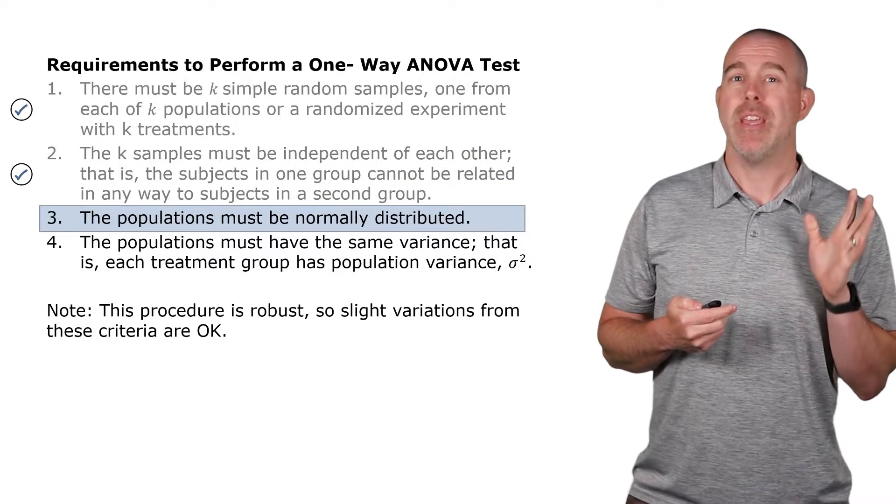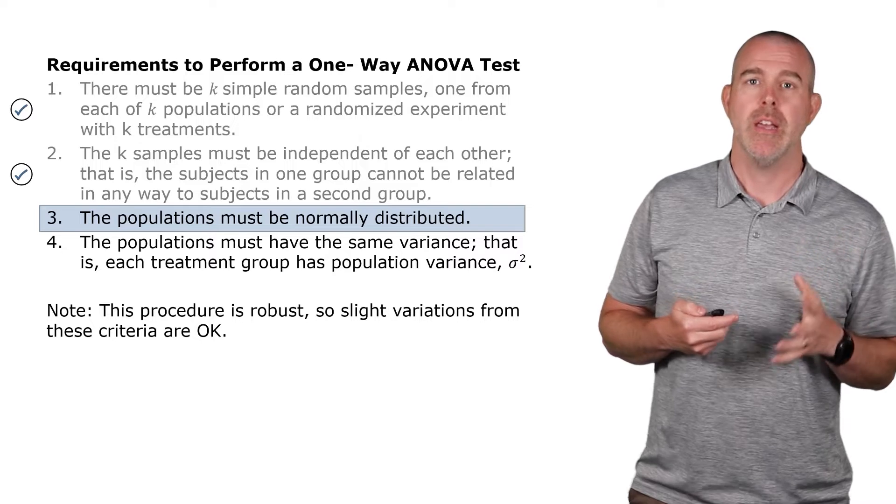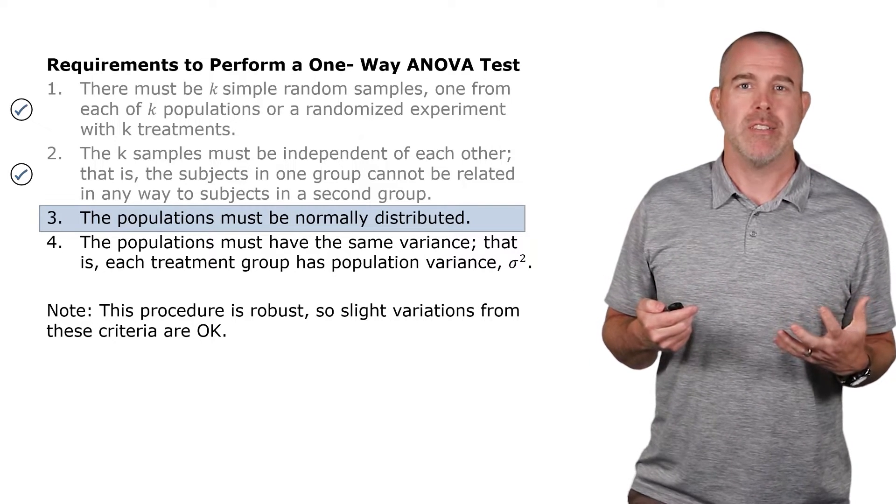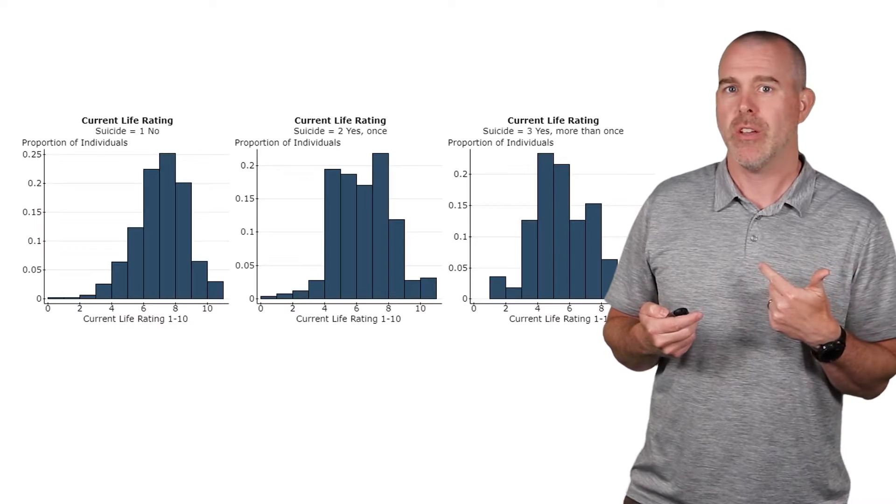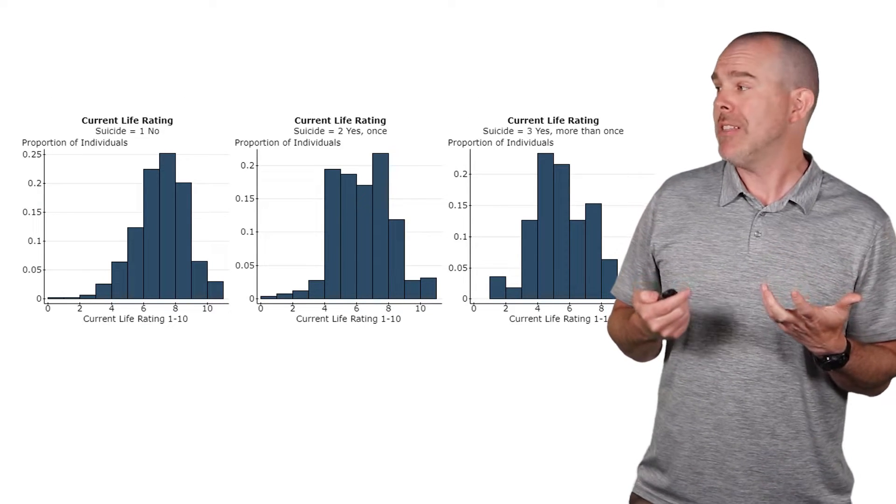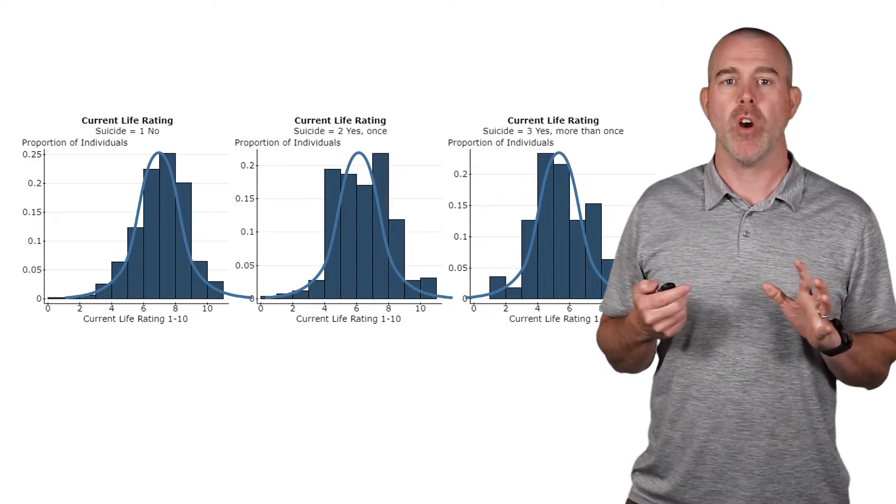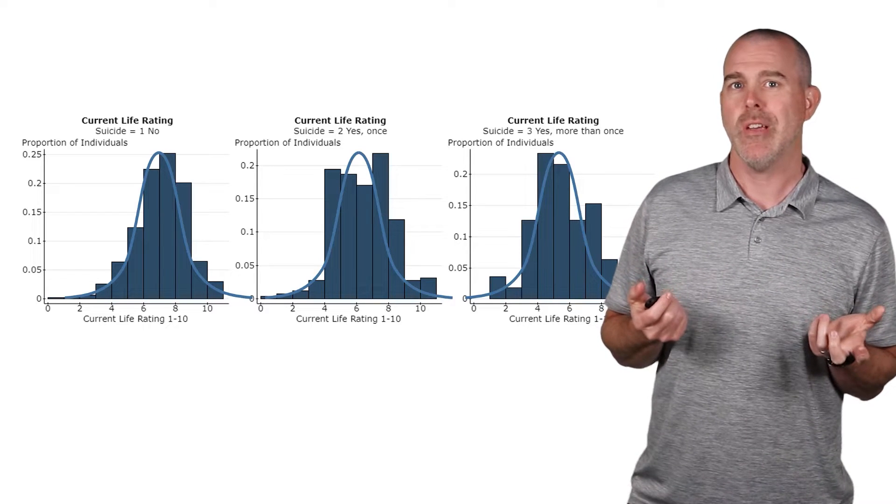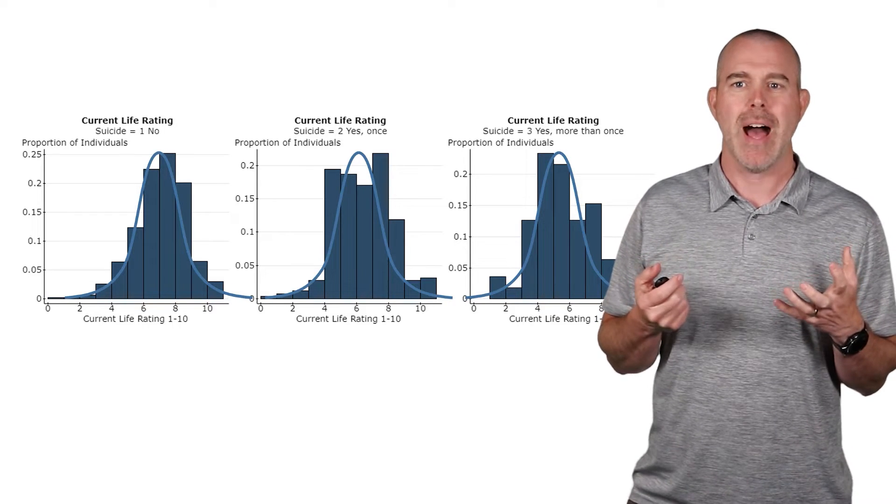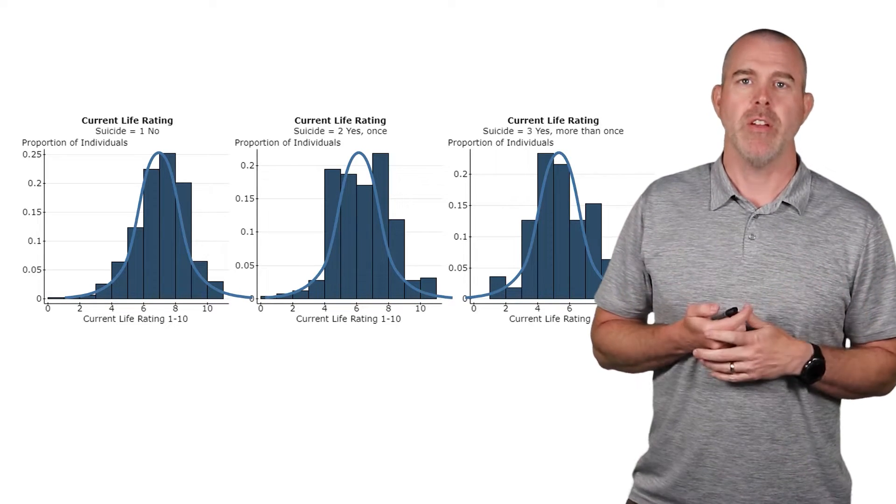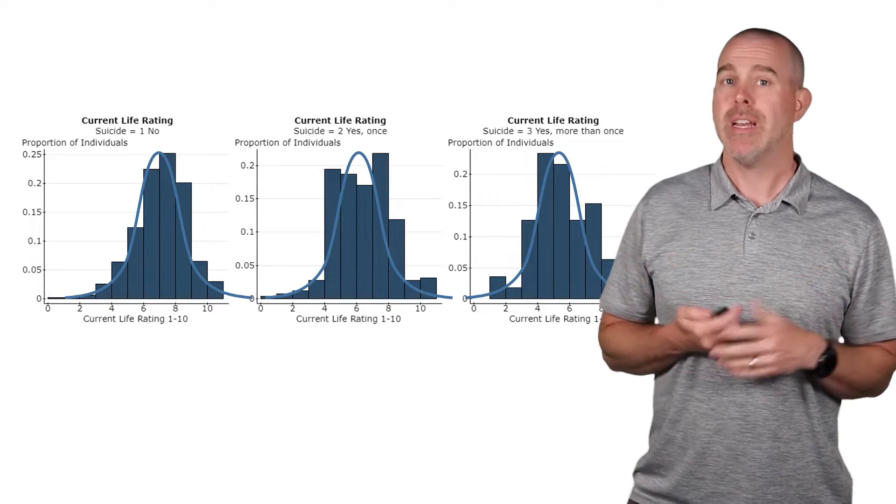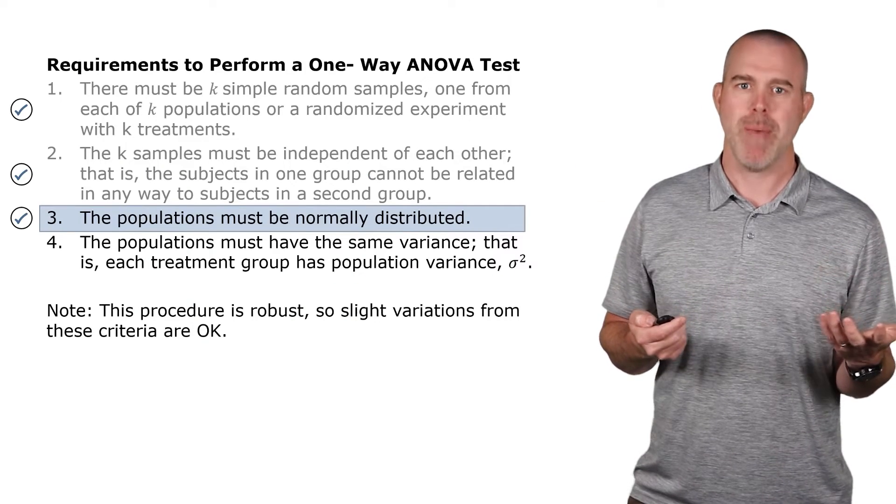Now, the populations have to be normally distributed. We have pretty large sample sizes here, so we can use histograms to see this. So let's take a look at those three histograms. And you can see here, if we put a normal curve, the first one looks pretty good, a little skewed left. The other two are a little blocky, but they're relatively normally distributed. So this one is reasonable enough. They're not terribly skewed. So we're going to say this condition has been met.